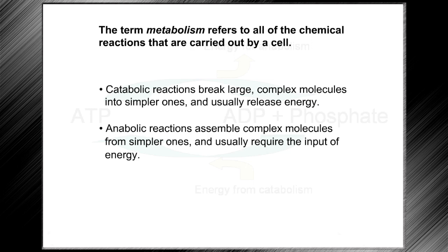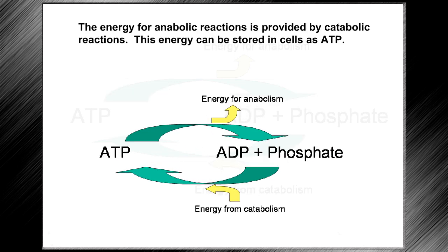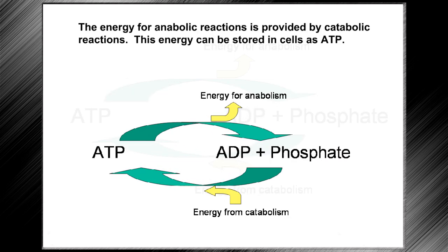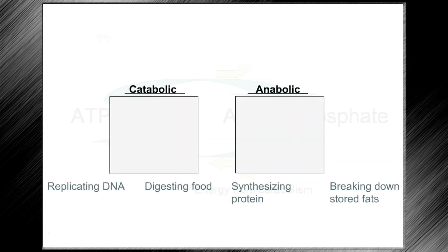Anabolic reactions usually require the input of energy, which is provided by catabolic reactions. This energy can be stored in cells as ATP. Which of these processes are catabolic and which are anabolic?